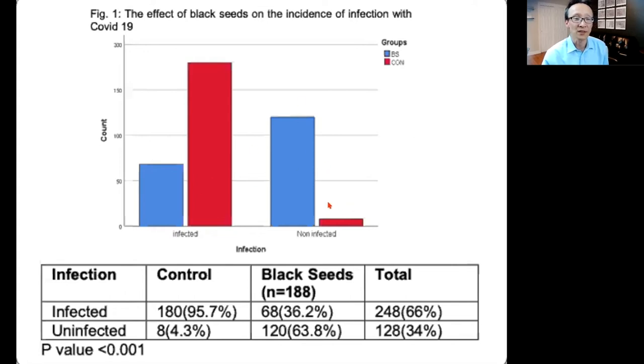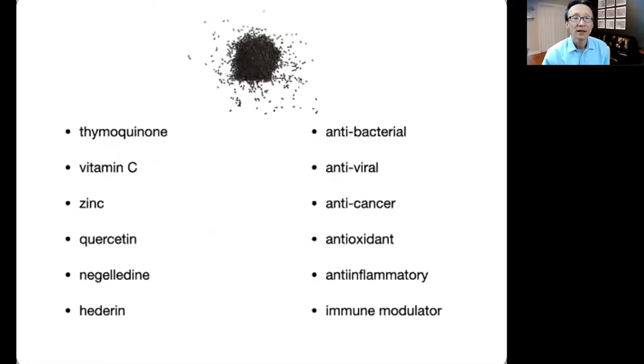And the P-value, which is the degree of significance, was very significant at 0.001. So again, despite the criticism that they didn't use PCR data, it's a pretty good study. Now, they cite thymoquinone as the main ingredient in black seed, and you'll see other ingredients besides thymoquinone, which is the main prominent ingredient, but black seed also has vitamin C, zinc, quercetin, nigellidine, and hederagenin.